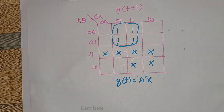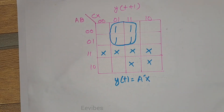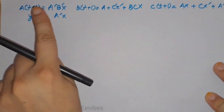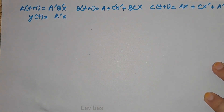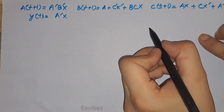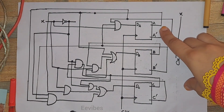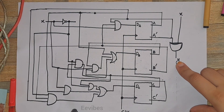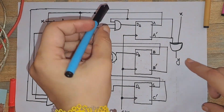Once you have determined the expressions for all the output functions and next states of the flip-flops, the next step is to draw the output circuit diagram. These are the function expressions that need to be implemented using flip-flops and combinational gates. We designed this circuit using three D flip-flops, and here is the complete circuit diagram producing A(t+1), B(t+1), C(t+1), and output Y from the input and current states of the three flip-flops. Thank you for watching.